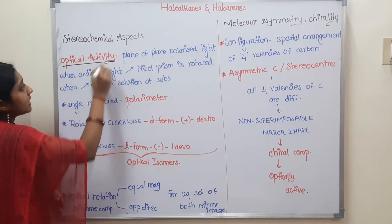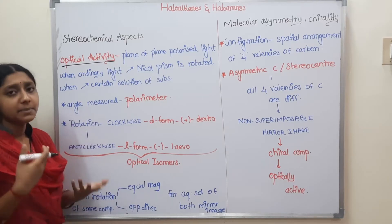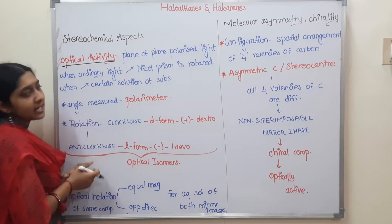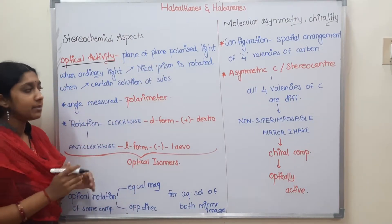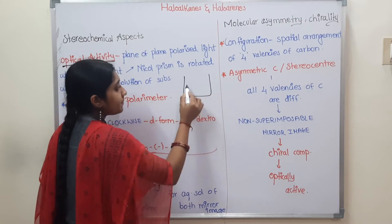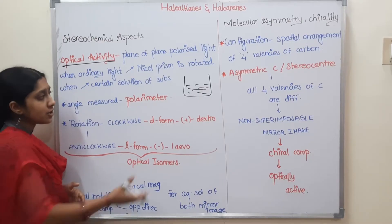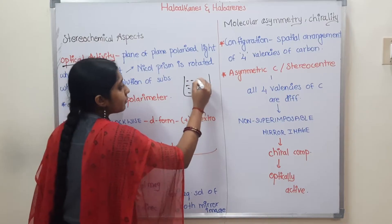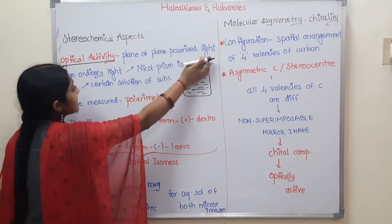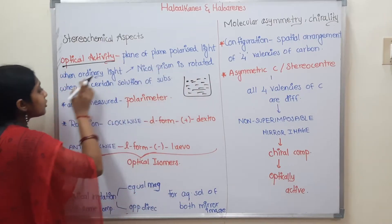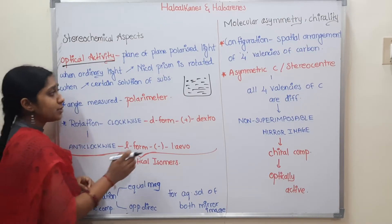The first thing is optical activity. We are going to see how it behaves. If we have a solution, we pass light through it — plane polarized light. When ordinary light passes through a Nicol Prism, it rotates when passed through certain solutions of substances.